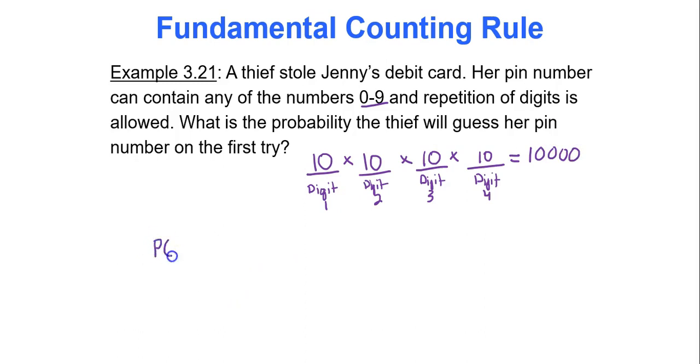What's the probability that the thief will guess the pin on the first try? Well, out of 10,000 pin numbers that the thief could possibly guess from, how many are the correct one? Just a single one of them. Just one pin number. That's all we have. So the probability is 1 out of 10,000. That's the probability that a thief will guess the pin number on the first try.